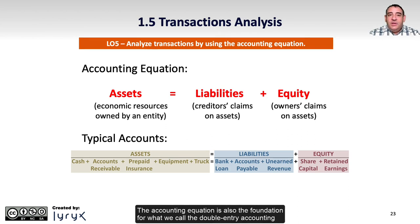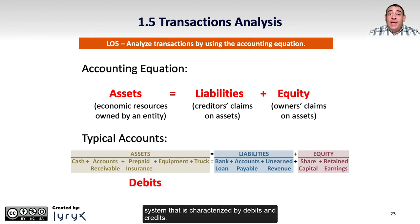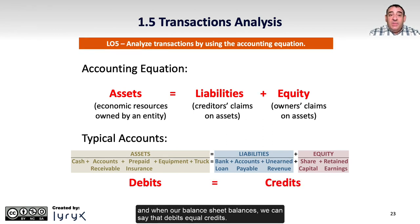The accounting equation is also the foundation for what we call the double entry accounting system, characterized by debits and credits. Assets are debits, and liabilities and equity are credits. When our balance sheet balances, we can say that debits equal credits.